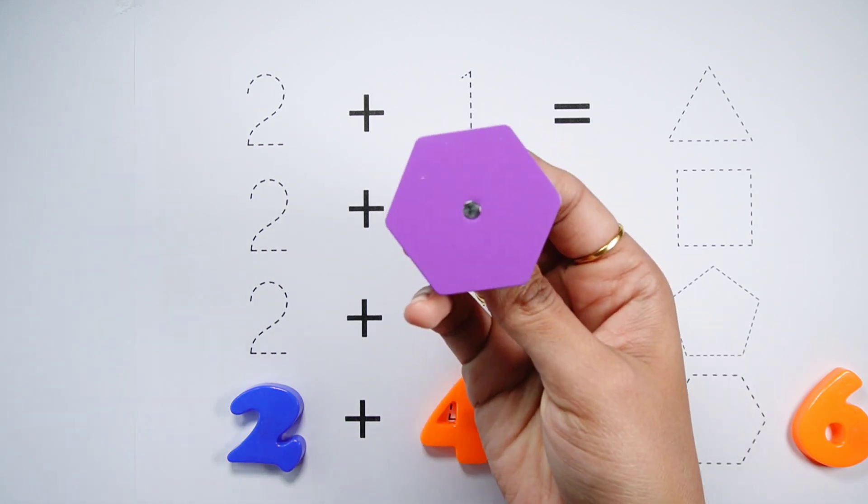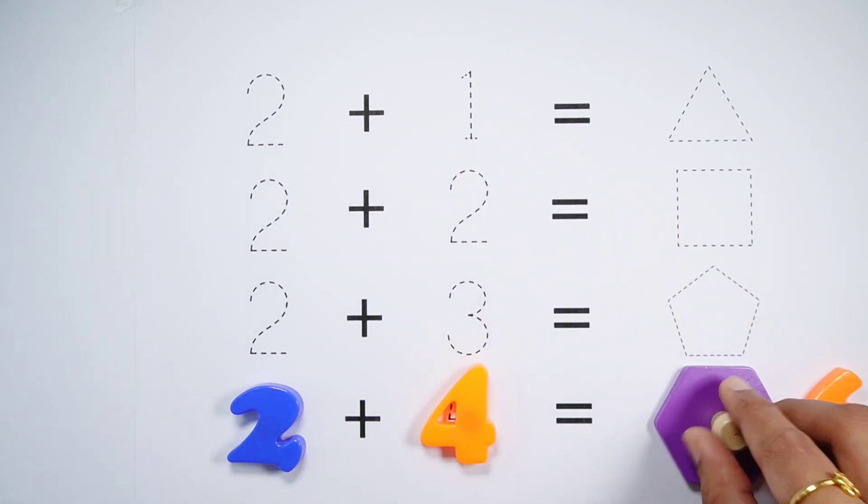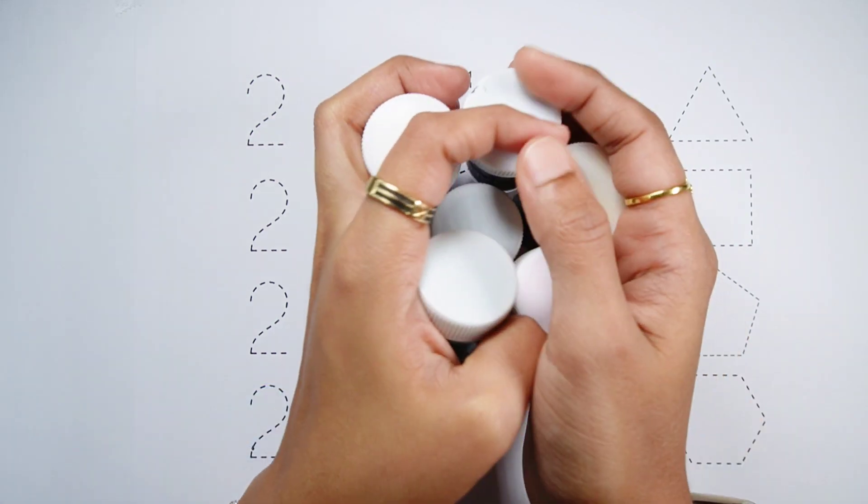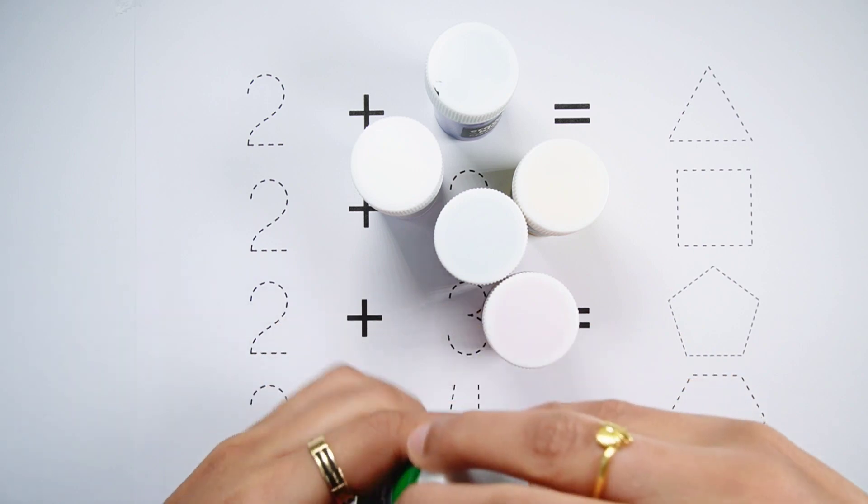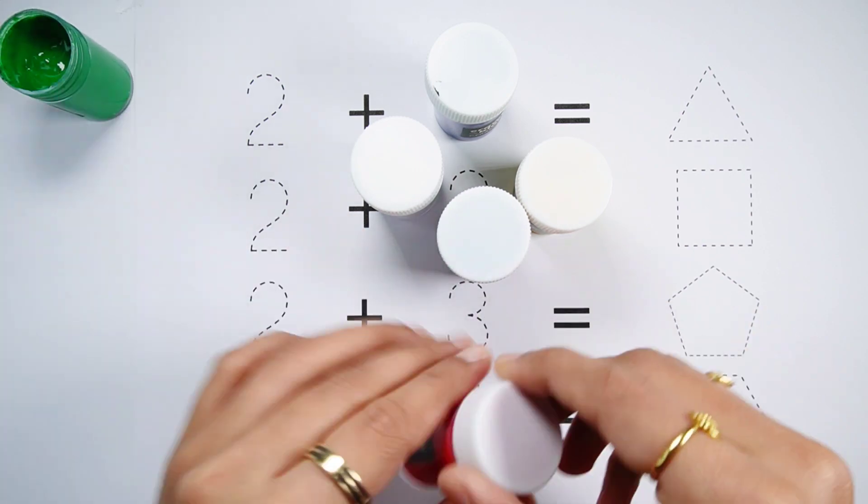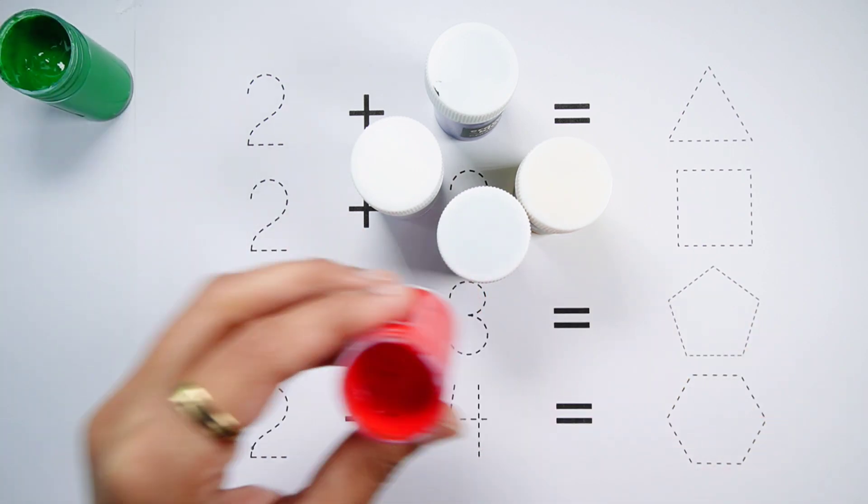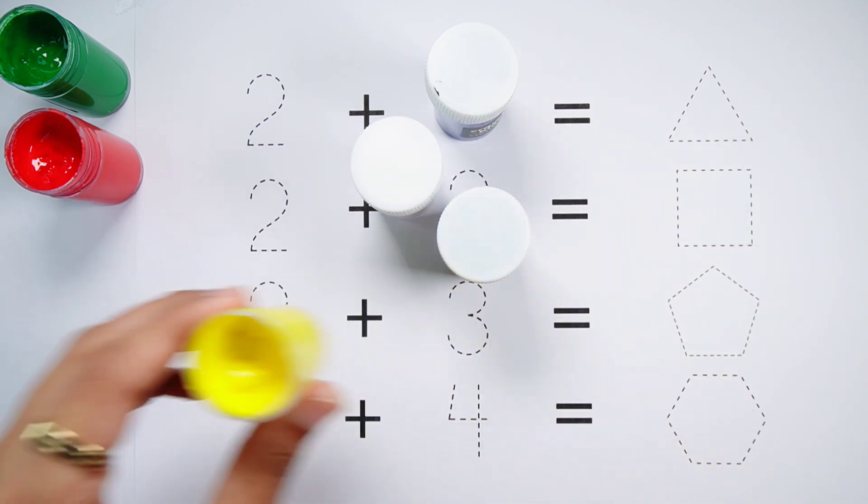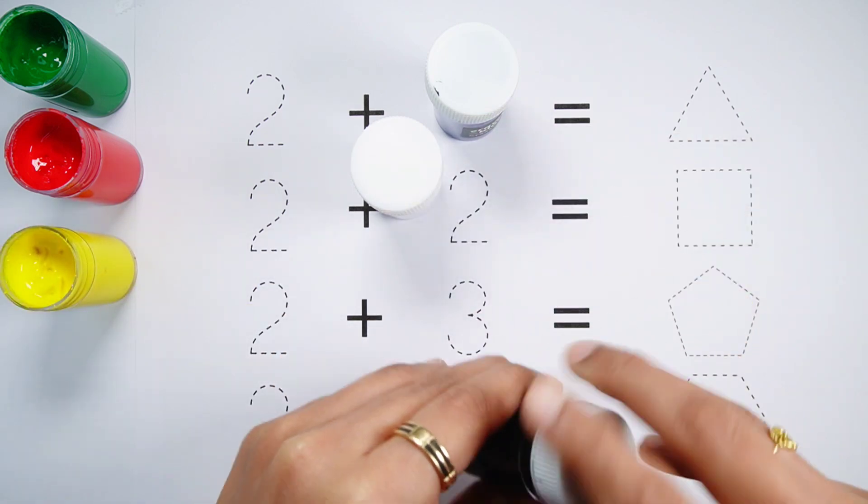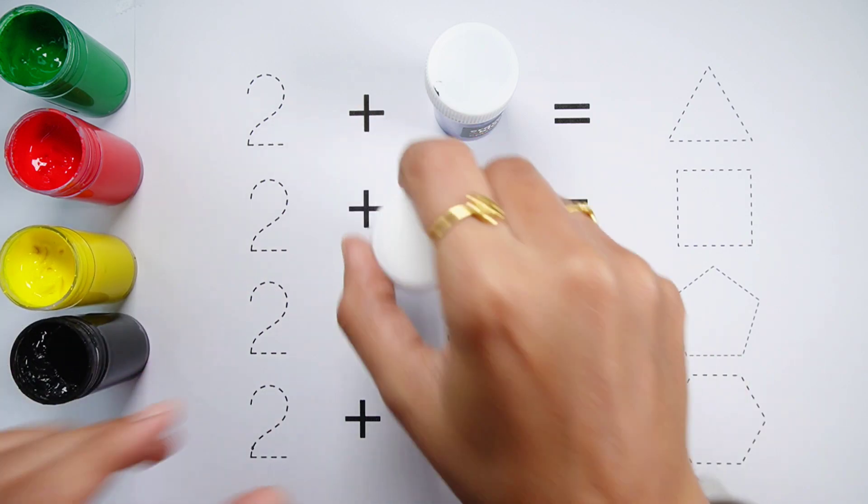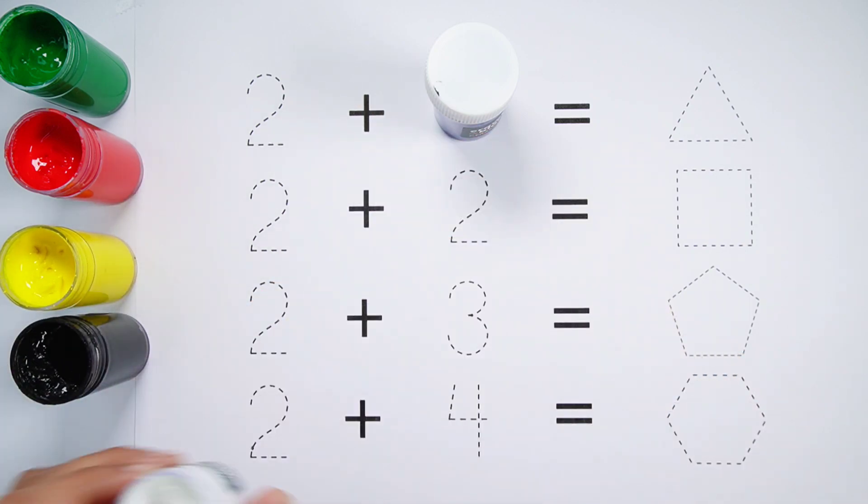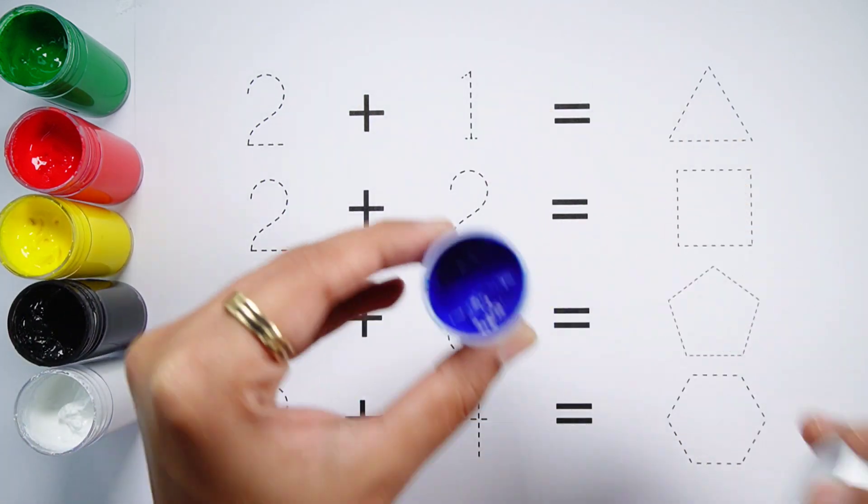2 plus 4 equals 6. A hexagon. Hexagon has six sides: 1, 2, 3, 4, 5, 6. Green color, red color, yellow color, black color, white color, blue color.